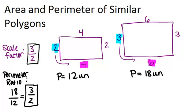So what this means is that the scale factor and the perimeter ratio will always be the same. So whatever the ratio is between corresponding sides for the two shapes, that will be the same ratio as the perimeter. And that's because perimeter is a one-dimensional measurement just like the length of a side is.